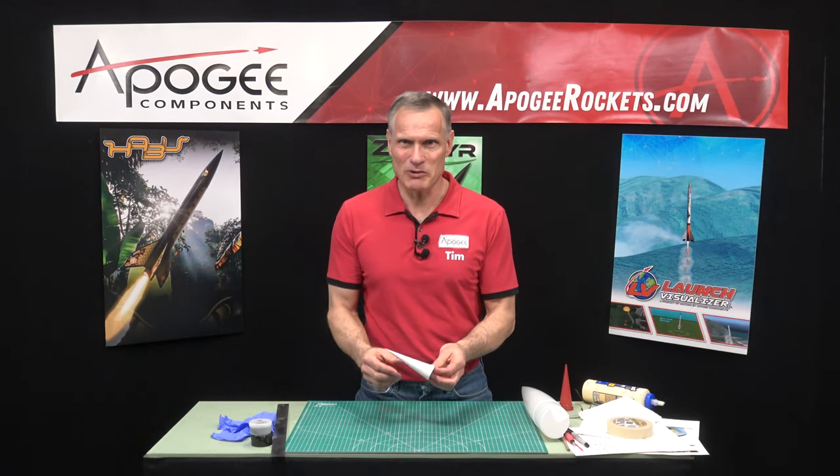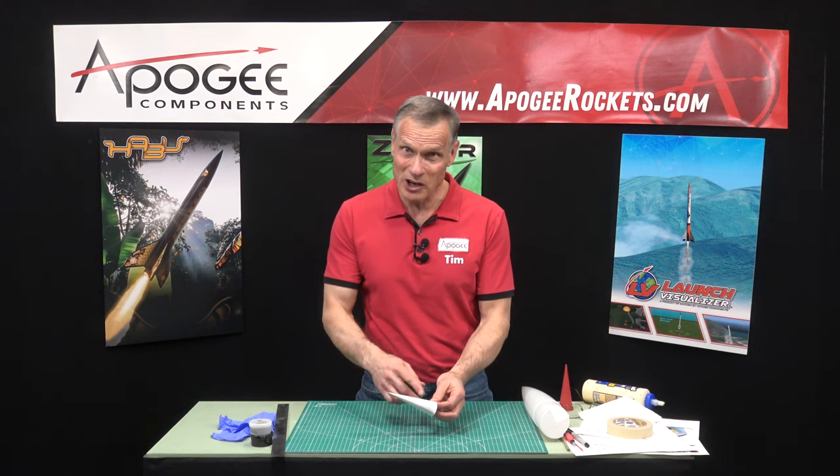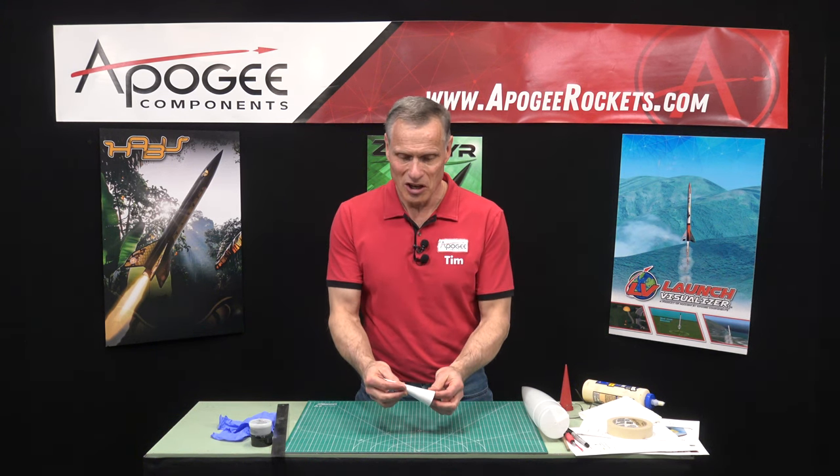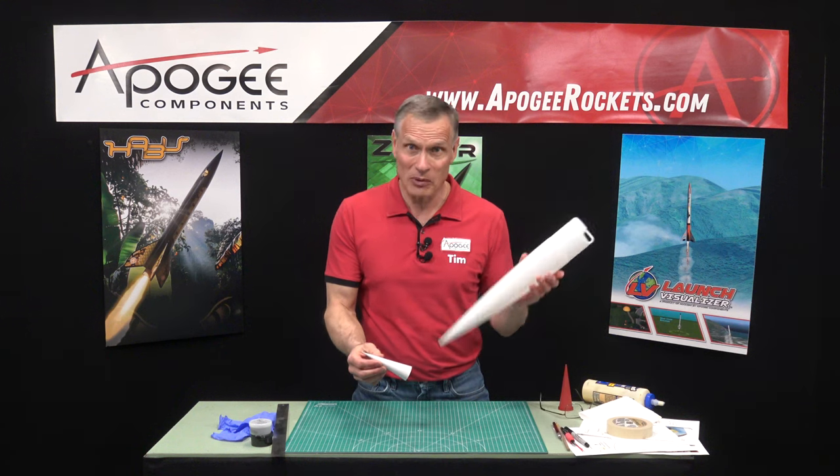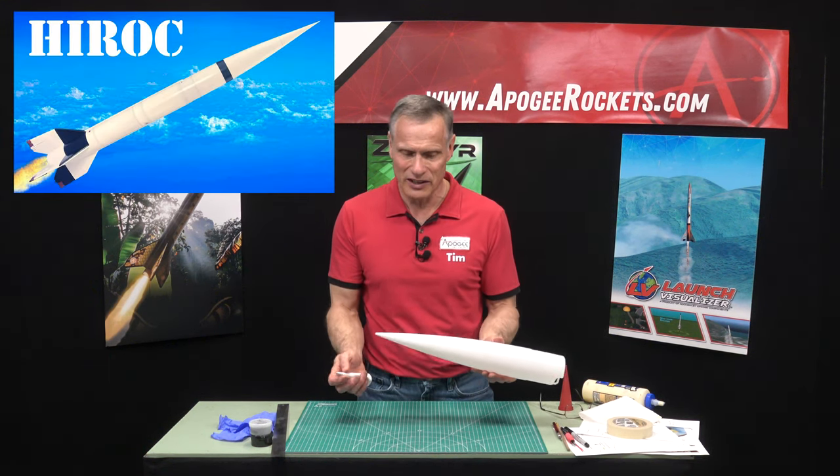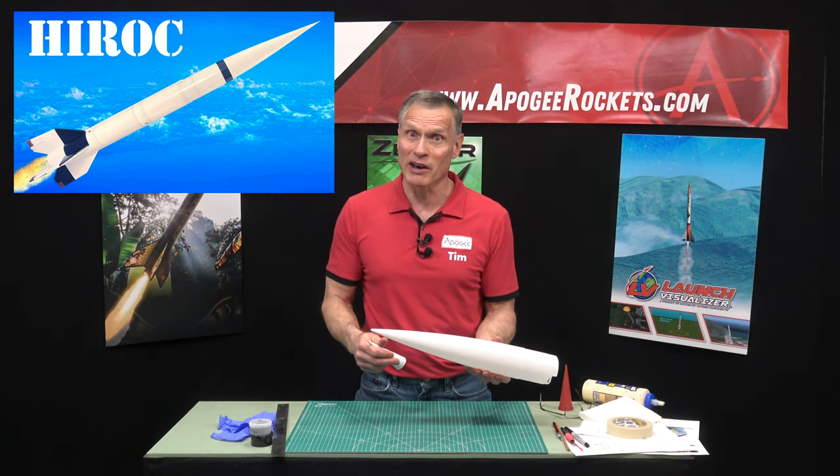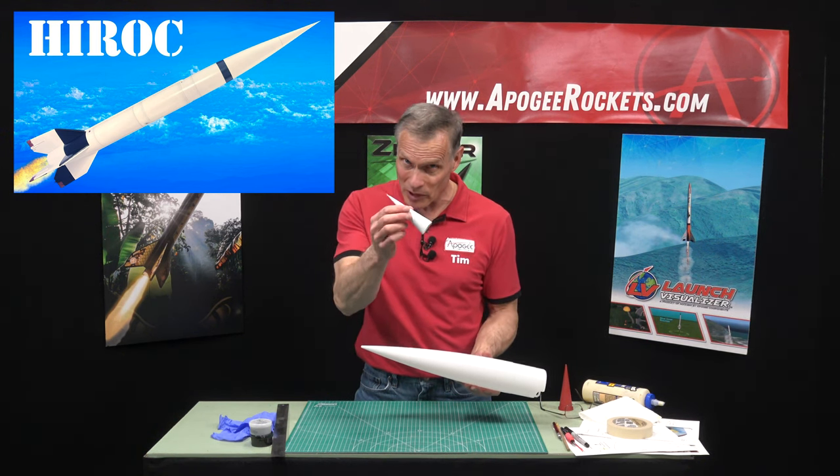I'm Tim Van Milligan from Apogee Components. Today I want to show you how to take a piece of paper and roll it into a cone for a tip on a rocket. We're going to be selling a rocket kit called the High Rock, and it uses this nose cone, but it's actually a scale model, and the real rocket had a pointy tip.